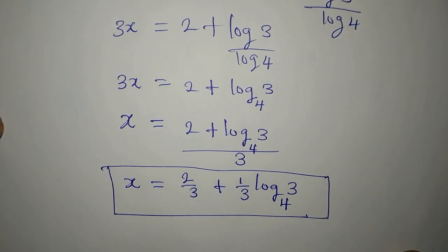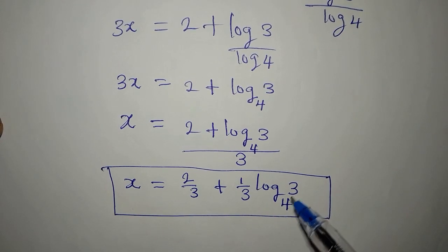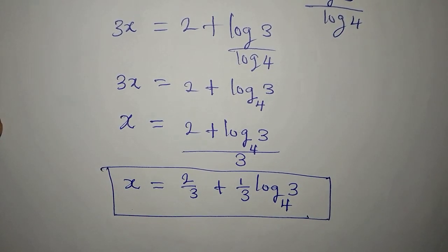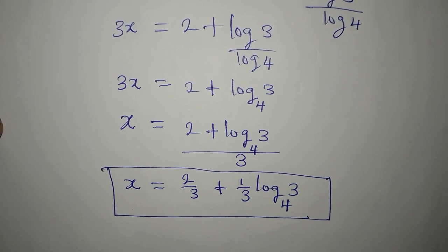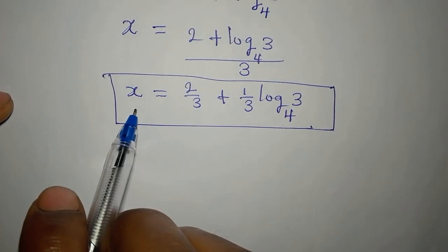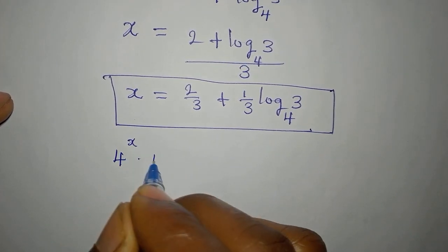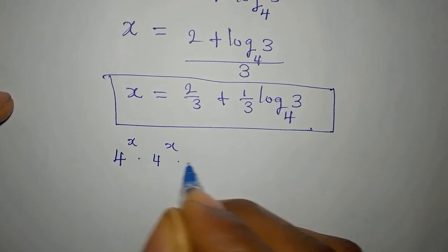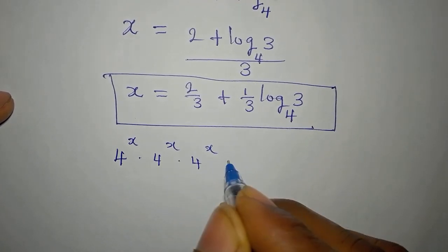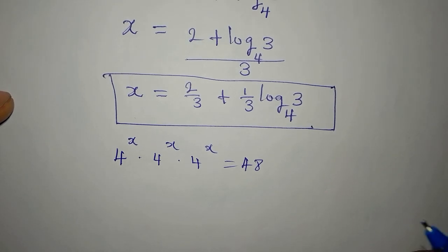If you want this in decimal form, you can use your calculator: compute 2 divided by 3, then add log 3 to base 4, and that gives you the decimal value of x. This is the value of x that satisfies 4^x times 4^x times 4^x equals 48.